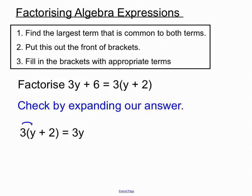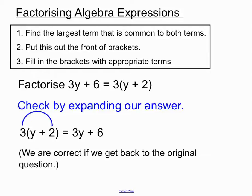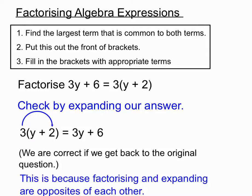3 times y plus 2. If we expand that, 3 times y is 3y, 3 times 2 is 6. What we've got there is our question. We're back to our question. So if we factorise successfully, correctly, we should be able to expand our answer and get back to the original question. And that's how we know we are correct. That's all because factorising and expanding are kind of opposites of each other. So any time we get a factorised answer, we can expand it and check whether we're correct.